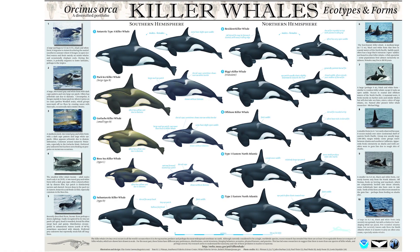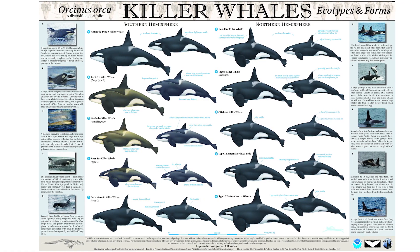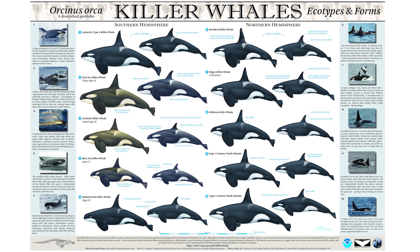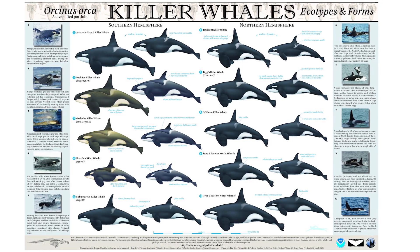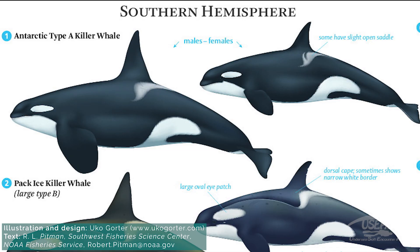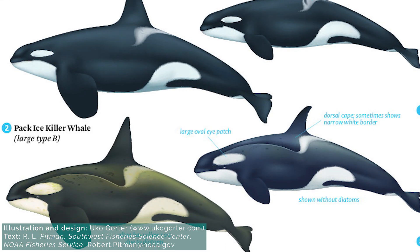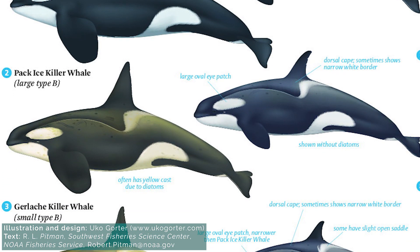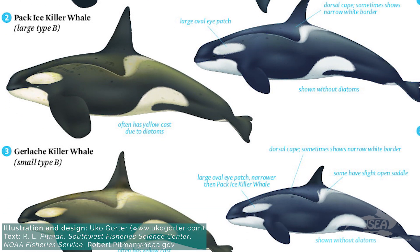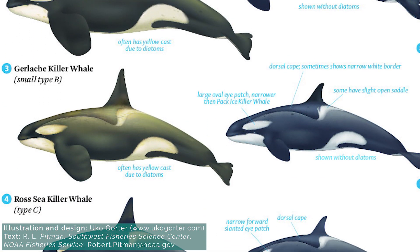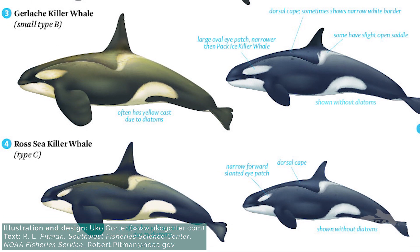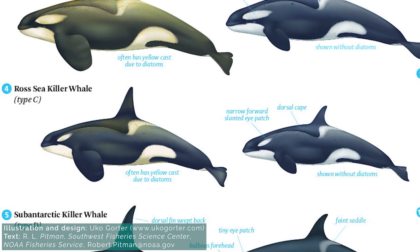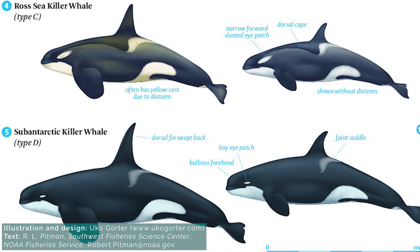What has happened over the last 800,000 years is that we can see the Orcas also started to evolve depending on where in the world they are. We can observe some differences between the different populations of Orcas. It can be the dorsal fin — more bent or straight. It can be the shape of the melon. It can also be the colors — some Orcas are more grayish, yellowish. It can be the size of the eye patch. We have what we call ecotypes of Orcas in the northern and southern hemispheres.